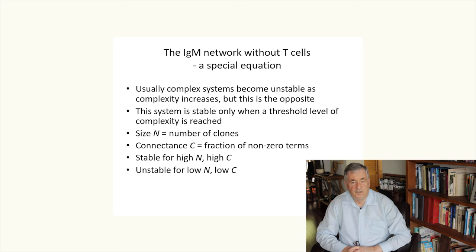The IgM network without T cells is a special equation. Usually, complex systems become unstable as complexity increases. But for this equation, exactly the opposite is true. The system is stable only when a threshold level of complexity is reached. Complexity is a combination of the size of the system, N, in other words, the number of clones, and the connectance C, which is the fraction of non-zero terms in our matrix, beta_IJ. The system is stable for high N and high C, but is unstable for low N and low C.